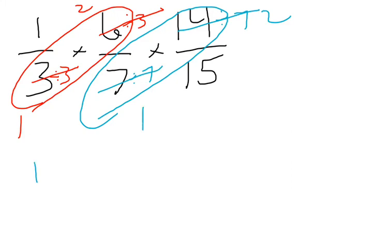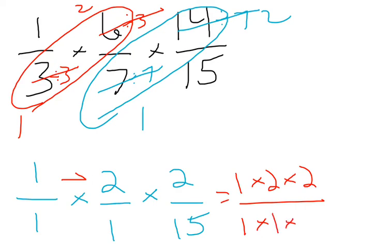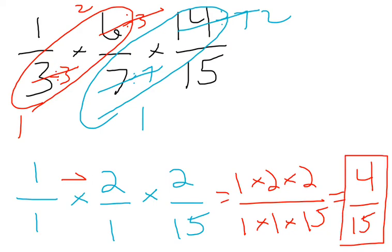Now I'm going to rewrite everything that I have: 1 over 1 times 2 over 1 times 2 over 15. This is much, much more simple — I'm not doing 6 times 14, or 3 times 7 times 15 anymore. So when I multiply across, I have 1 times 2 times 2 over 1 times 1 times 15, which gives me 4 over 15. 4 fifteenths cannot be reduced anymore, and that is my final answer.